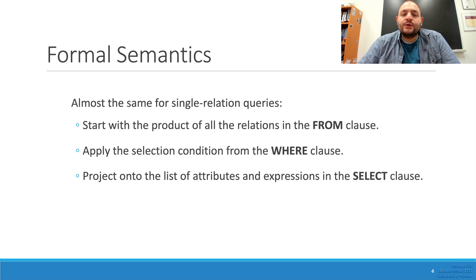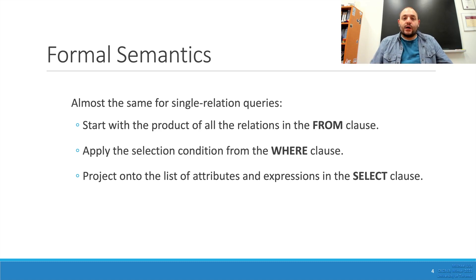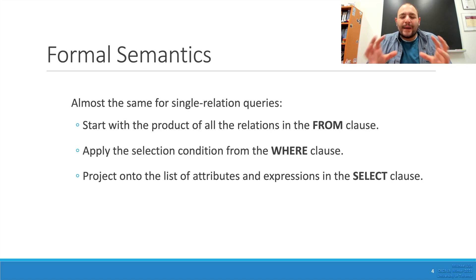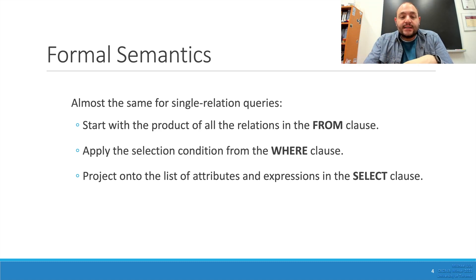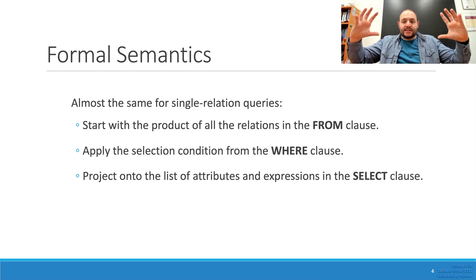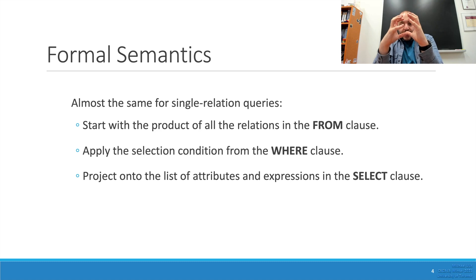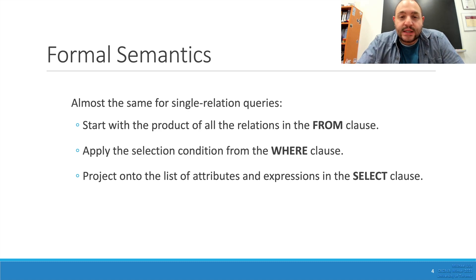Formally, when you look at multi-relations, it's almost the same as single relations. The idea is you start with the product of all the relations from the FROM clause — you have a giant table — then you apply a selection condition in the WHERE clause, which cuts it down to a smaller portion. Finally, that smaller subset of data gets projected onto a list of attributes based on the selection criteria.